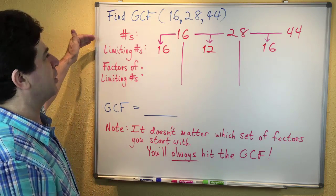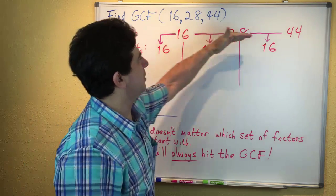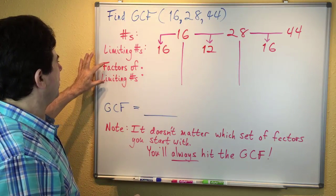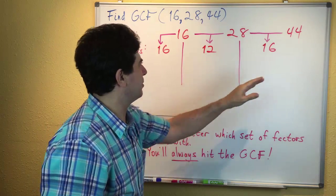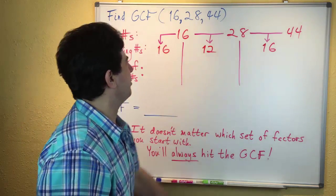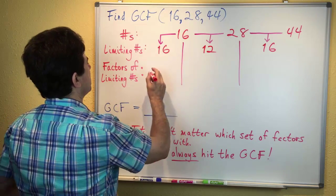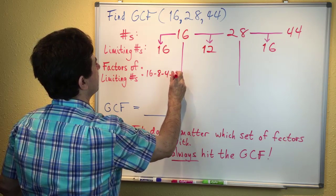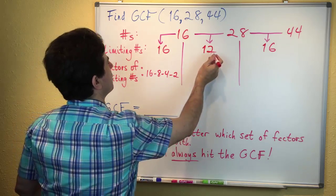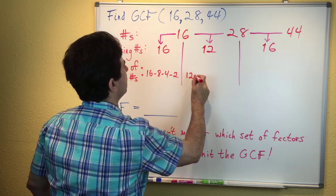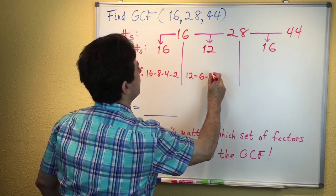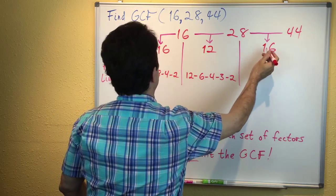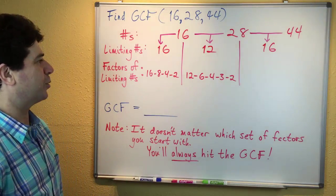We have a three-row approach: the numbers first, the limiting numbers in the second row, and the third row has the factors of those limiting numbers. The factors of 16 are 16, 8, 4, and 2. The factors of 12 are 12, 6, 4, 3, and 2.